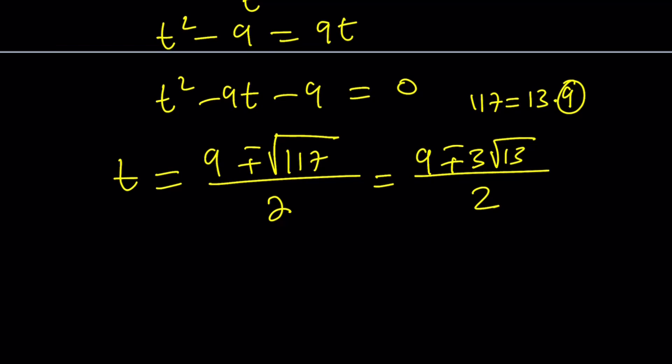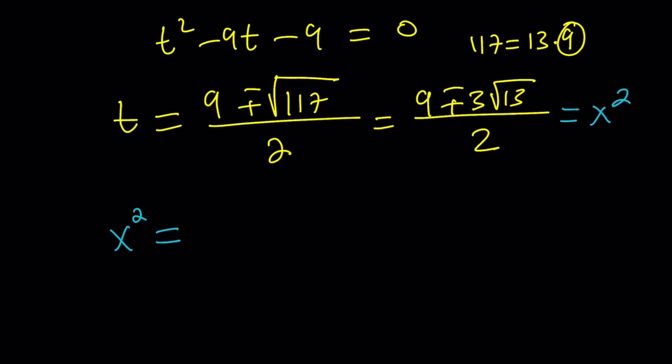Okay? So, that's the t values. Those are the t values. But, t is x squared. So, let's set this equal to x squared. From here, we get two separate equations, like x squared is this and x squared is the conjugate of this.